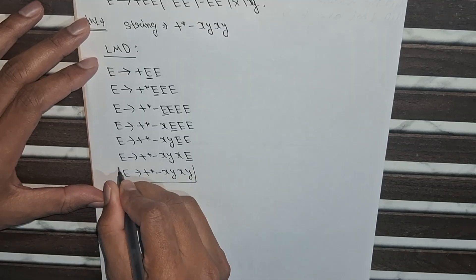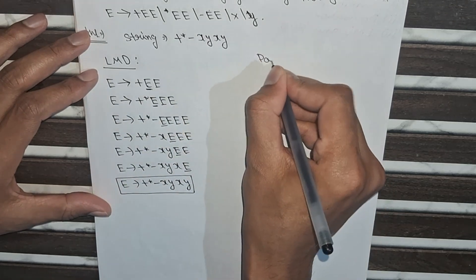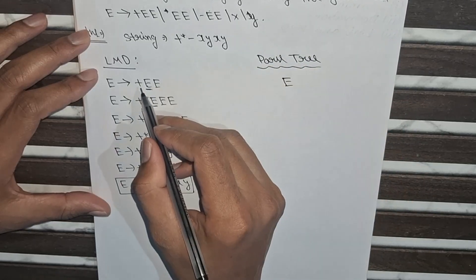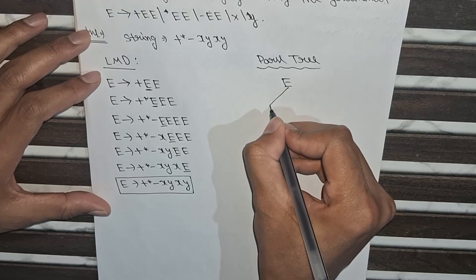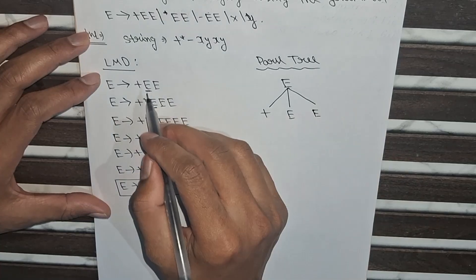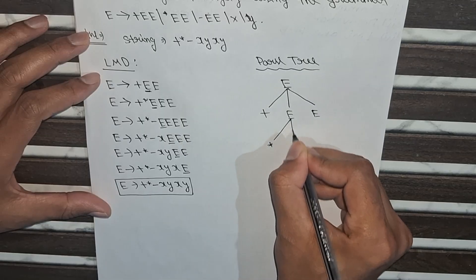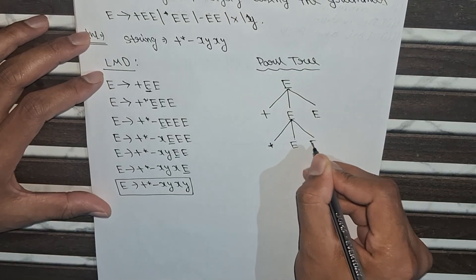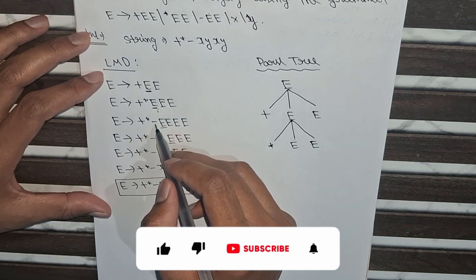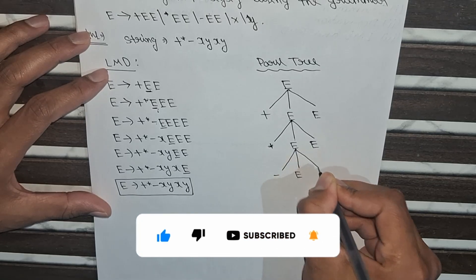Now I will make the parse tree for the LMD. The starting symbol is E, and the first step we take +EE, so I will make this as: E to plus, E, and E. The next variable is this E — I am putting this E as *EE, so I will draw E to star with two E children. Now the next variable I put this E as -EE, so minus E and E.